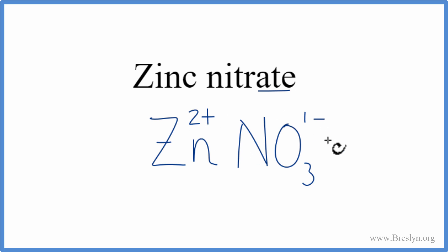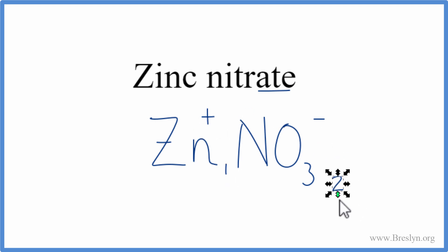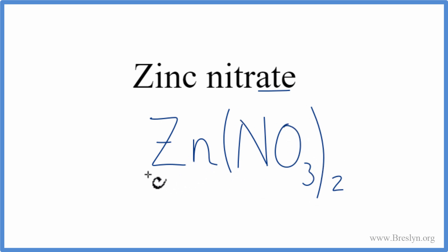They don't add up to zero — we don't have a net charge of zero. But we can change the subscripts to make that happen using the crisscross method. We move the one here and the two over here. We don't write the one by convention. Then we need to put parentheses around the nitrate, because we have two nitrate ions.